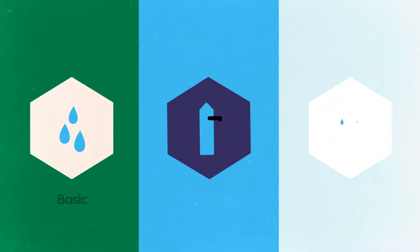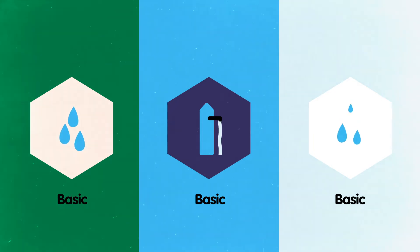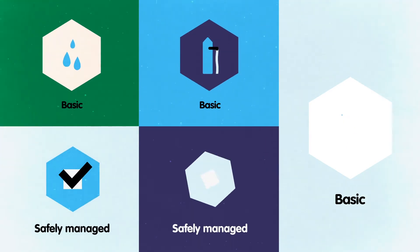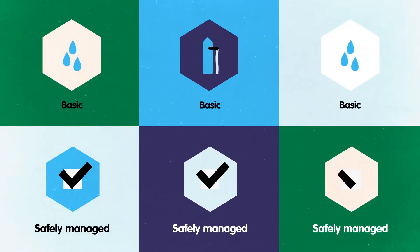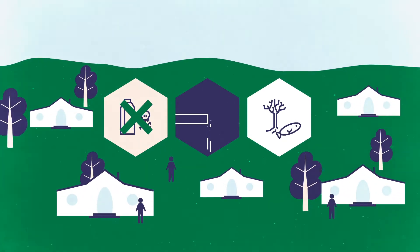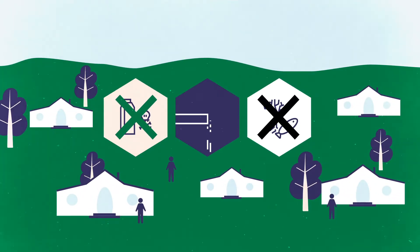Halfway up are basic services, when water comes from an improved source within a 30-minute round trip of the home. And at the top are safely managed services — piped on the premises from an improved source, available when needed and free from fecal and chemical contamination.